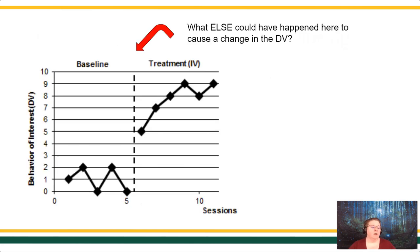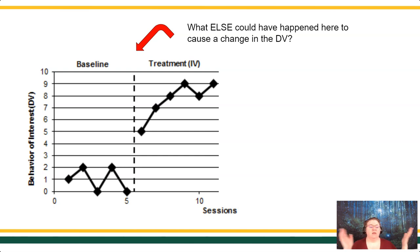Let me show you what I mean. This is a very simple comparison design. The y-axis shows the behavior of interest and the x-axis shows the session time. Baseline levels: 1, 2, 0, 2, 0. Then we get into treatment: 5, 7, 8, 9, 8, 9. But that's only a comparison design — anything at all could have happened in the life of our client when we started treatment. It doesn't have to be just our treatment alone, so we can't say for sure that it's our treatment and not something else.